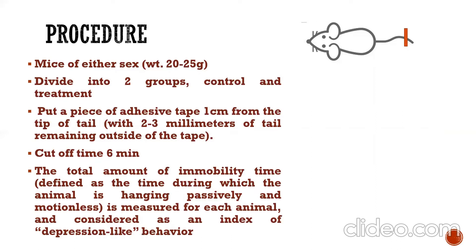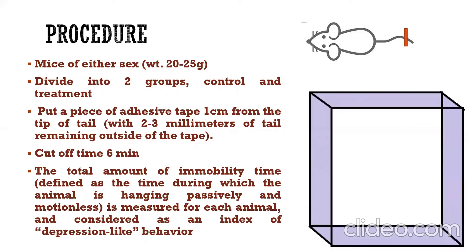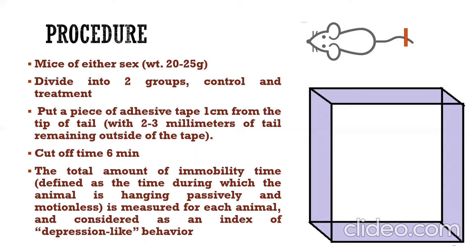This experiment is conducted in a small three-sided chamber. The mice with the adhesive tape at the tail are held into the chamber, and you observe the movement of the mice for six minutes. The cut-off time is six minutes.